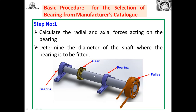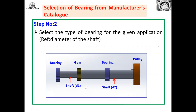Sometimes the shaft diameter where the bearings are mounted may be given; if not, we have to determine it. Based on the forces, our target is to find out the shaft diameter. You have already studied how to design a shaft in Design of Machine Elements — the same approach and ASME code of shaft design can be used to find the shaft diameter. Once you know the shaft diameter, we can easily select the bearing from the catalogue and check whether it is suitable by following the different steps in the basic selection procedure.